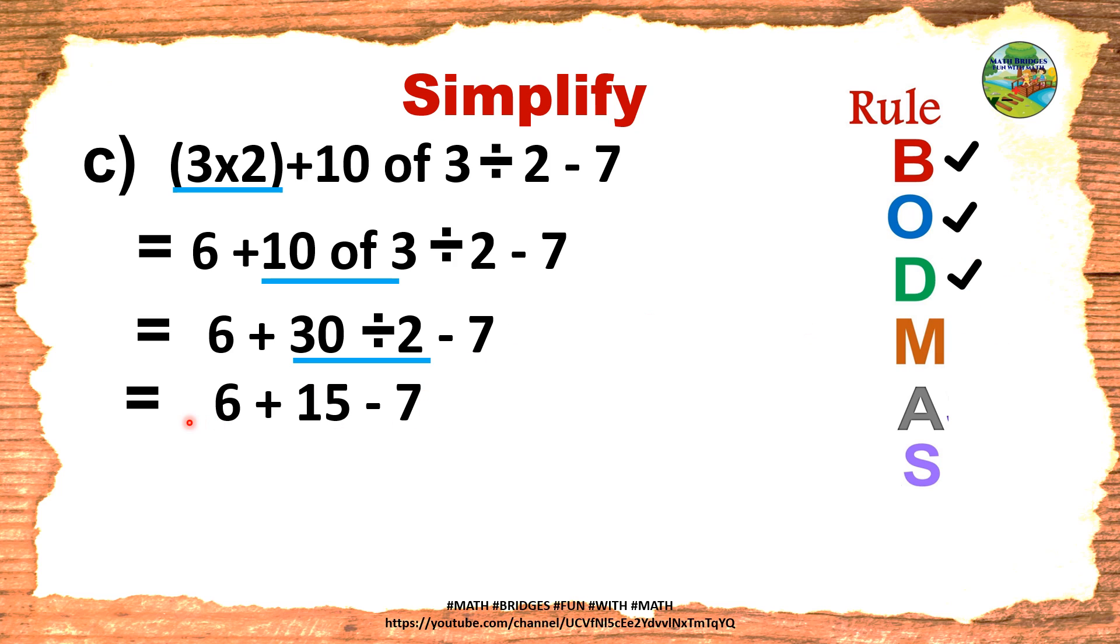M, multiplication. Is there multiplication in the last step? No, so cross out. Is there addition in the question? Yes. Underline. So we will solve this. 6 plus 15 is 21 minus 7. Addition is over, tick it. Now is there subtraction in the last step? Yes. Underline. So 21 minus 7 is 14. So our answer is 14. You can tick it immediately. Subtraction is over and the final answer is 14.